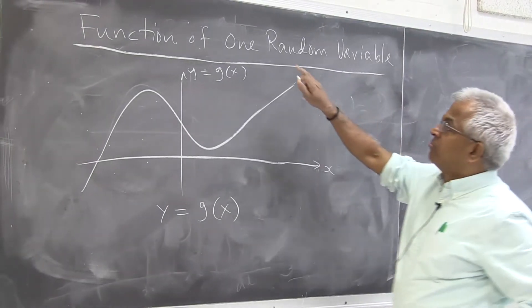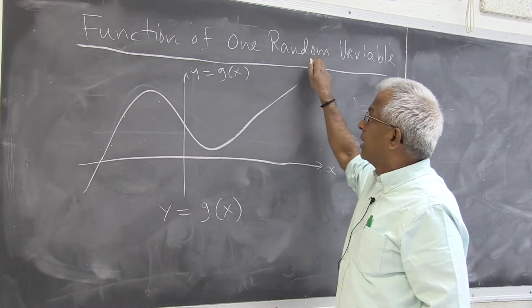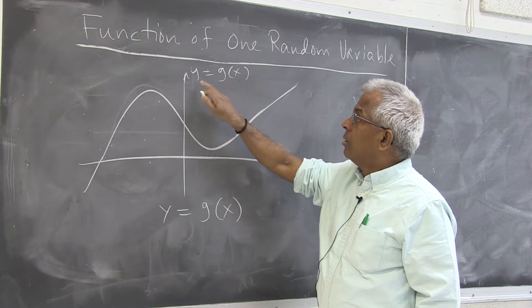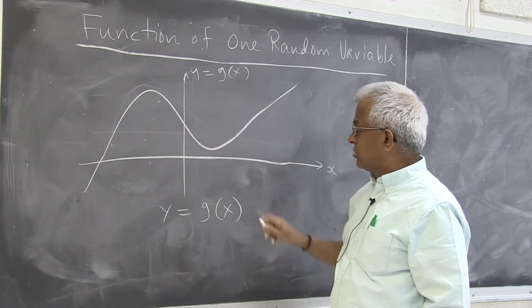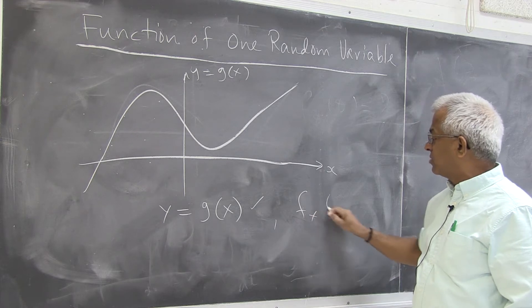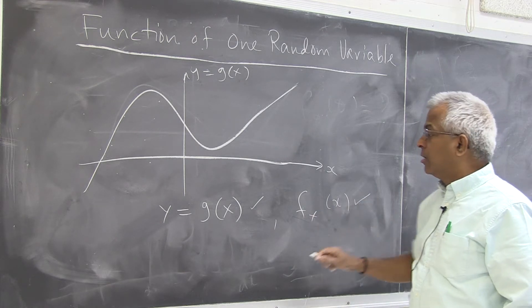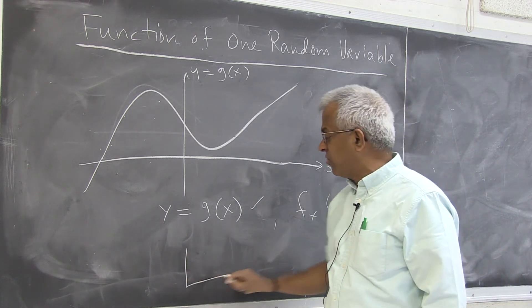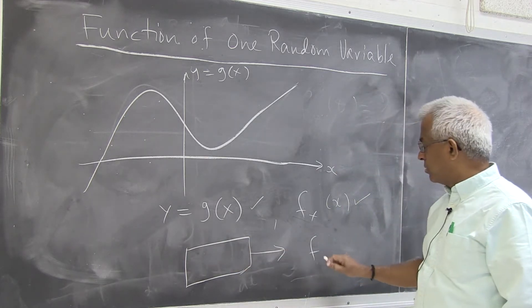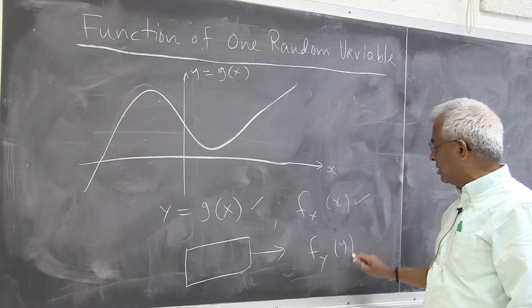Let's look at this problem of a function of one random variable. So y equals g(x). This is the function that's given to us. And generally the density function of x is also given. And the problem is finding the density function of y. We want f_y(y). This is the classic problem.